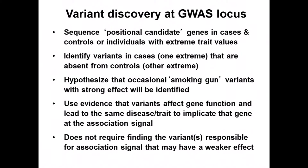Another strategy to identify low-frequency variants for a complex trait is to look specifically at variants near loci identified from genome-wide association studies — so-called positional candidates chosen based on their position near association signals. Analyze them in cases and controls or individuals with different trait values, looking for variants present in one group but not the other. The idea is not necessarily to identify variants underlying the GWAS signal itself, but to implicate a given gene in that region by identifying variants that affect gene function and lead to the same disease or trait.